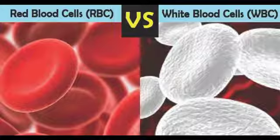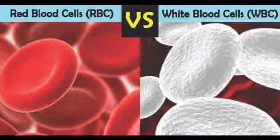RBCs are produced in the bone marrow of vertebrates by specialized stem cells. In the embryo, they are formed in the liver and spleen. RBCs are formed at the rate of about 2 million per second. The lifespan of RBCs is 120 days, after which older RBCs get destroyed in the spleen and liver.